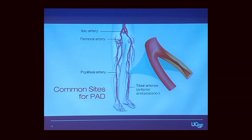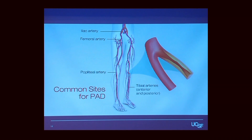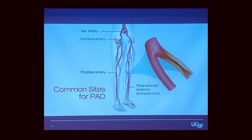The same thing can also happen in our legs, and that's called peripheral arterial disease. People can get cramping and pain in their legs when they walk up a flight of stairs, and sometimes if the plaque ruptures they can get necrosis or ischemia of a leg, potentially causing them to lose that leg.